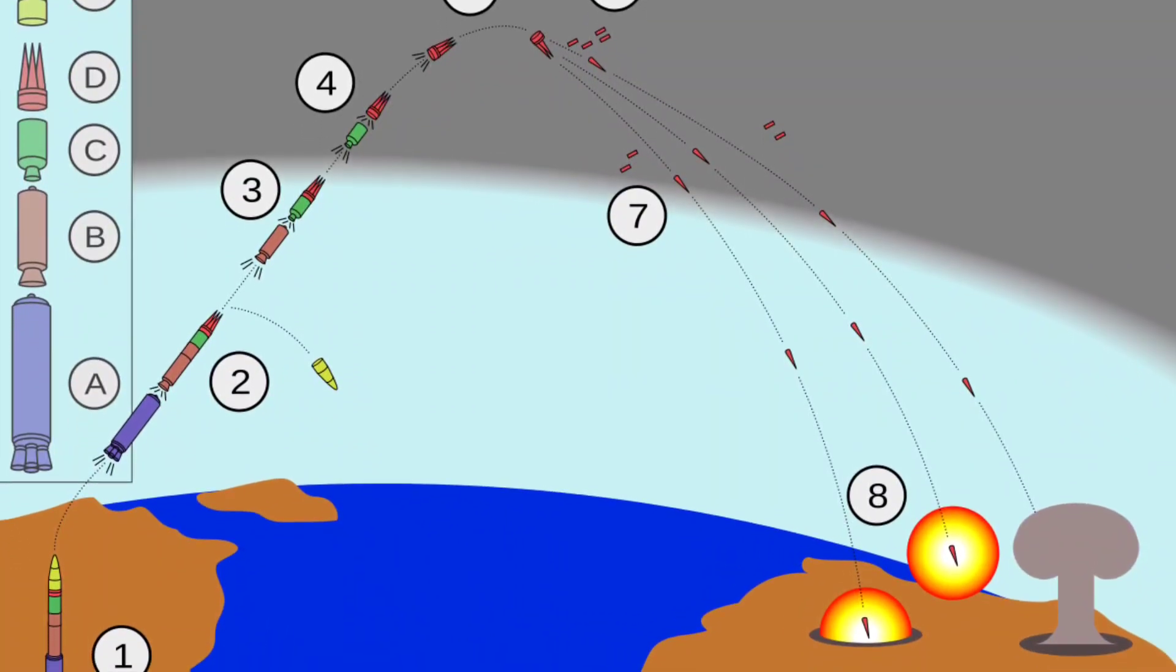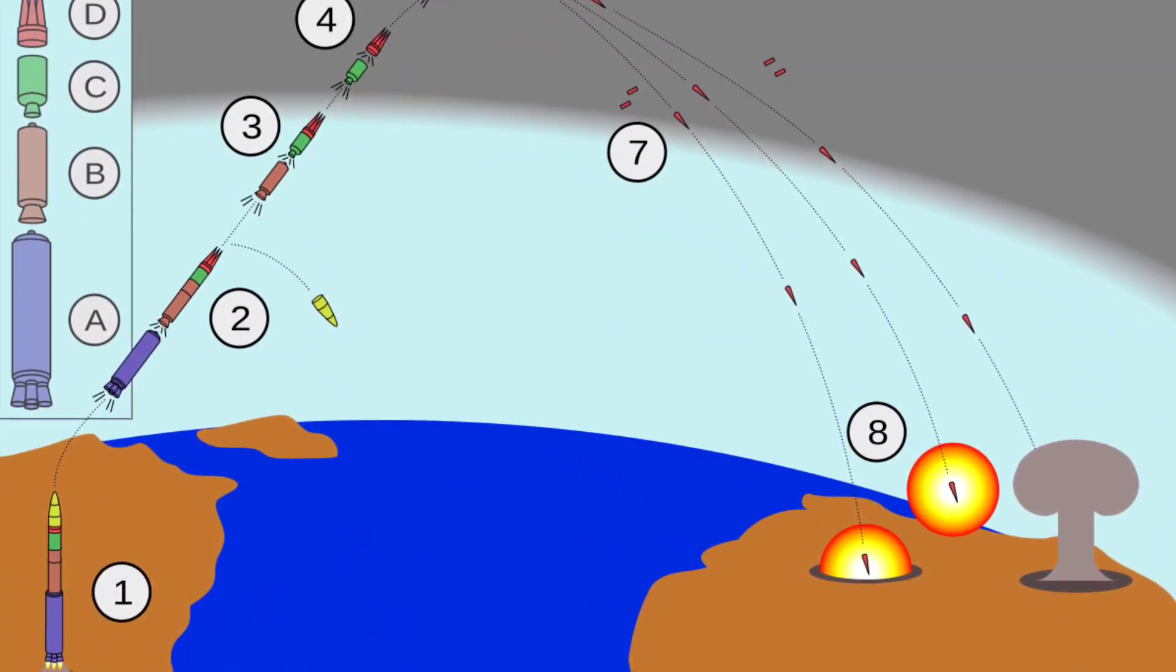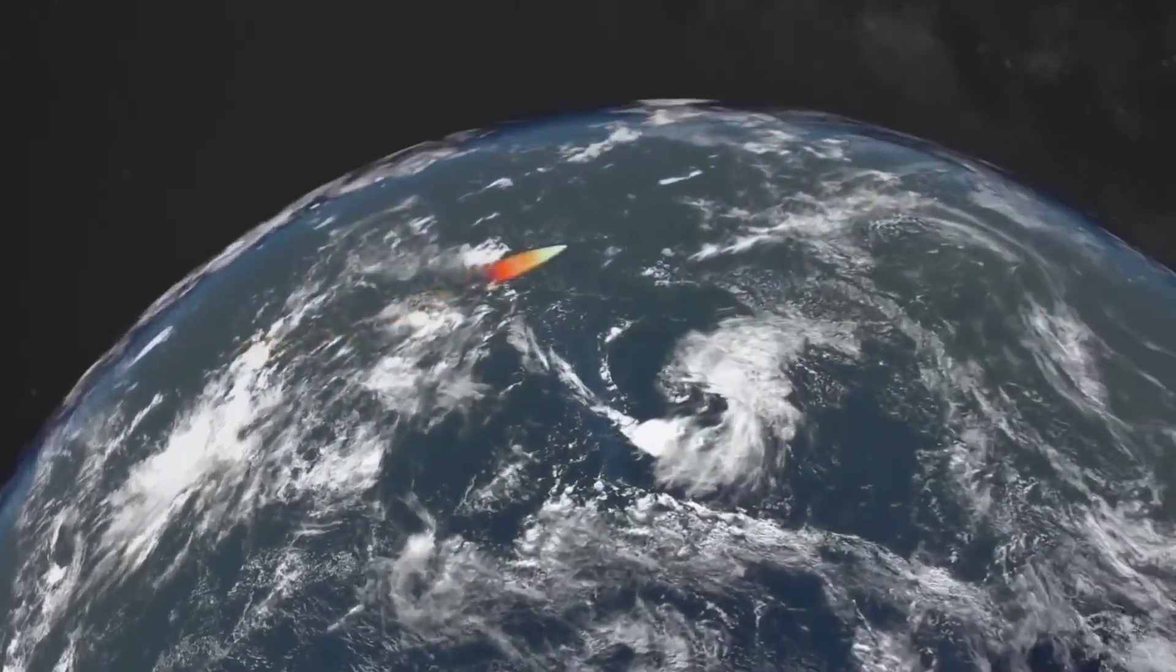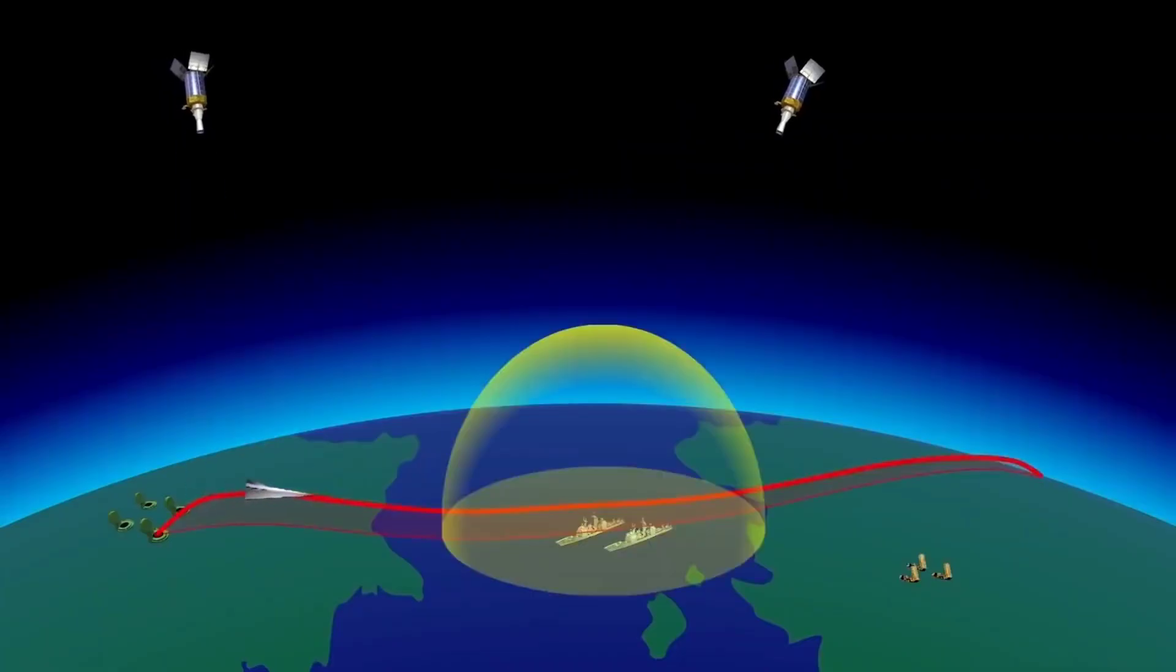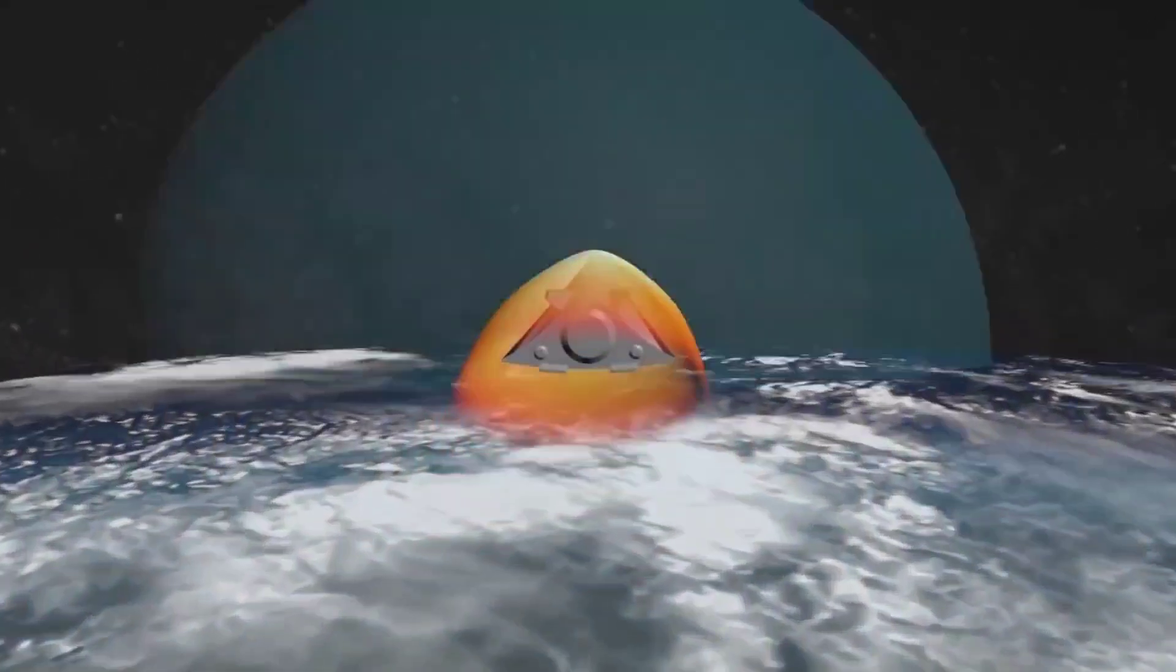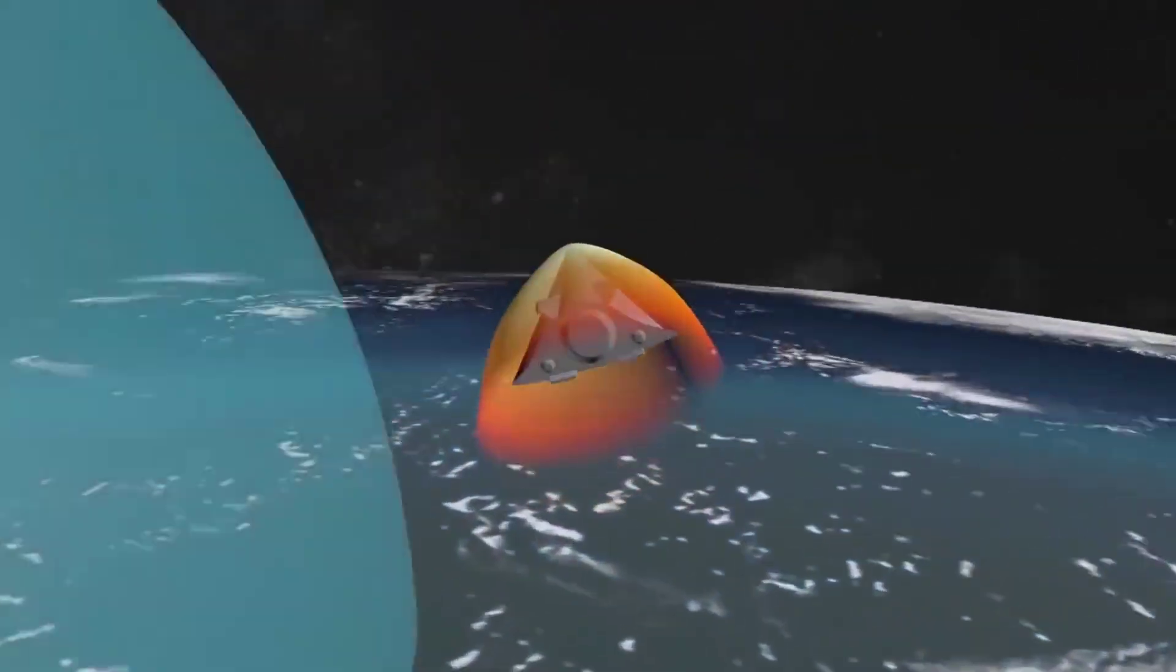Unlike traditional warheads that follow predictable ballistic arcs, the Avangard can change course mid-flight, performing sharp maneuvers while traveling at hypersonic velocity. This makes it nearly impossible for current missile defense systems to intercept. Each Avangard can carry either a conventional or nuclear payload, and its extreme energy on impact gives it unmatched destructive potential.